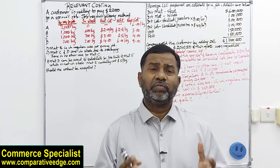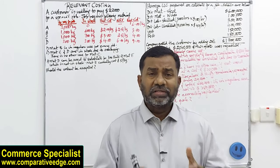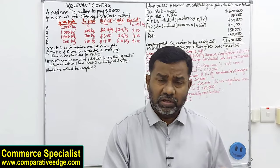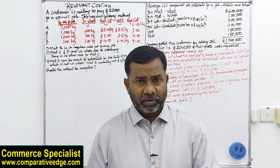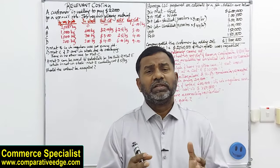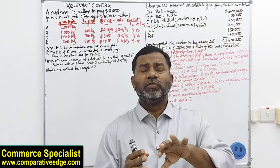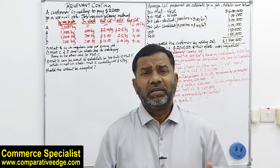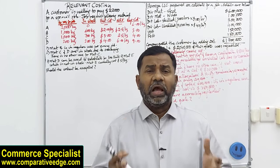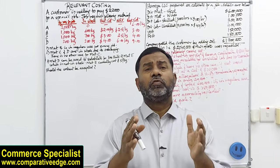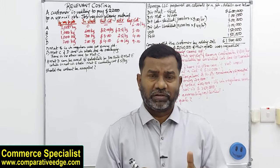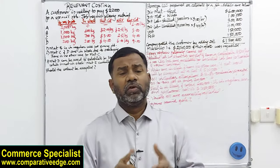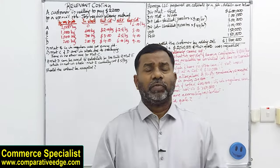When we take decisions, there are many factors and variables which we consider. Some of them are irrelevant for the decision, some of them are relevant. Our focus is to remove the irrelevant aspects — the irrelevant factors which unnecessarily confuse us — and our aim is to focus only on the relevant factors. We call them the relevant cost.